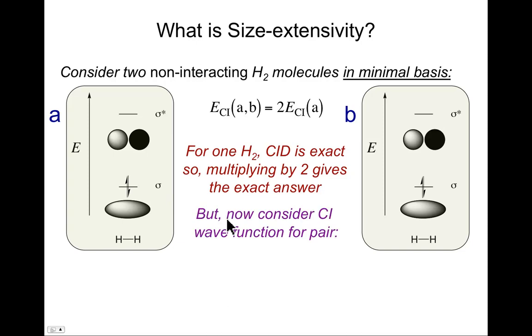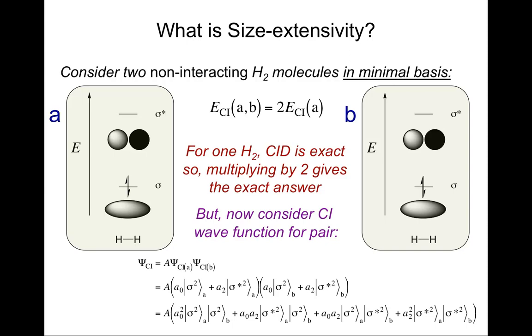But what if I actually construct the CI doubles wave function for the pair of the two molecules, actually just the full CI wave function for a moment? And so what is the correct wave function? Well, it's an anti-symmetrized product of the wave function of the individual molecules. And the individual molecules, of course, they have the same wave function, they just differ in whether I call it A or B. So here it is, there's some anti-symmetrization operator. It's A times sigma squared, 0 times sigma squared, plus A2 times sigma star squared. And then same thing over here, but it's for molecule B. So I'll just expand that out. So I get A0 times A0, A0 squared, sigma squared A times sigma squared B, so that's what I have here. Plus there's a cross term, A0 times A2, where it's A times B. And then finally, A2 times A2, sigma star squared, sigma star squared.